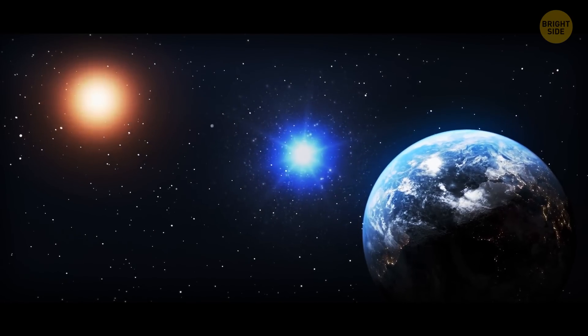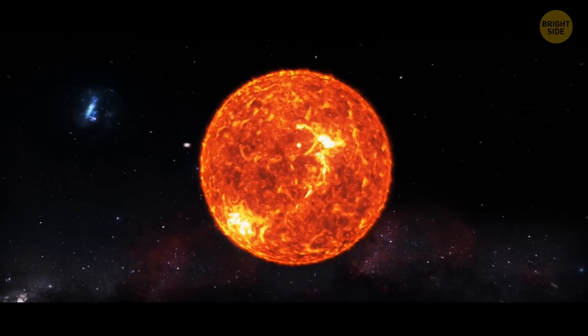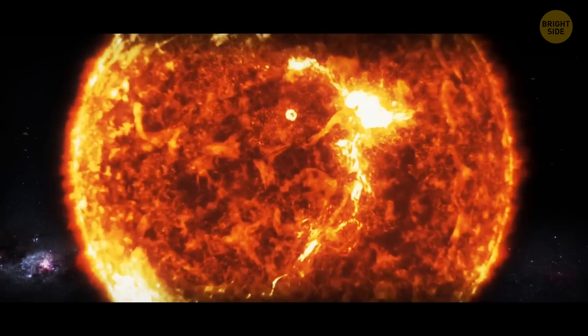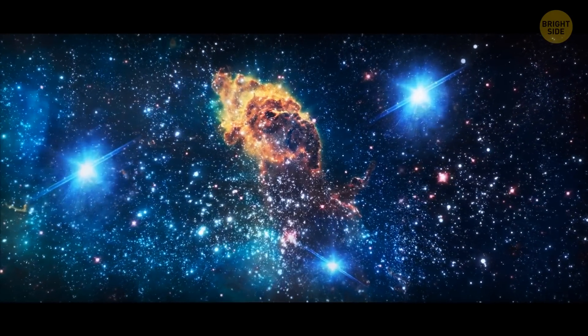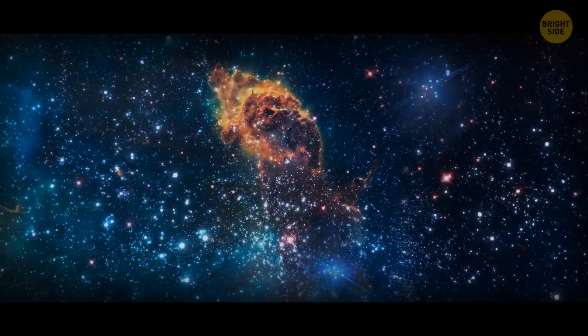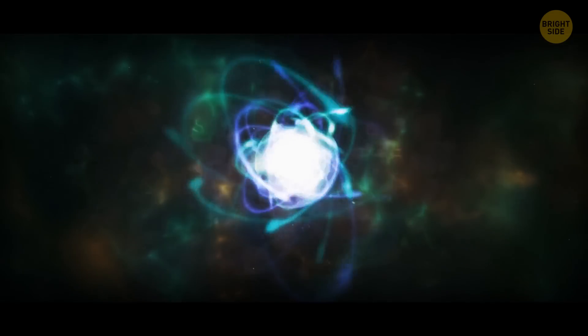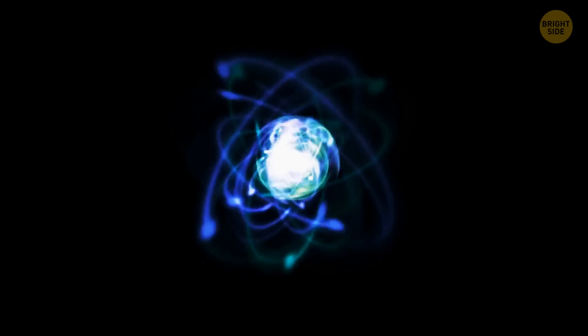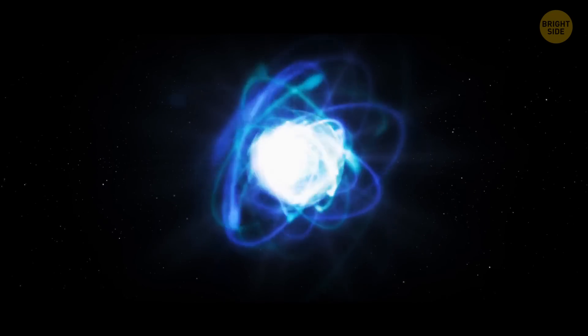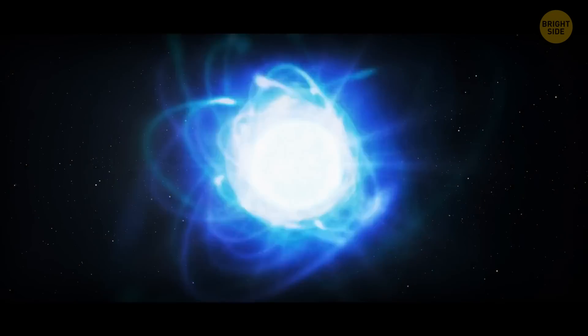Neutron stars are the size of a small city, yet their mass is about 1.4 times that of the sun. They're formed when massive stars die, and their cores collapse in on themselves. The core continues to press in on itself until all the electrons are essentially crushed together, leaving only neutrons. This makes neutron stars one of the densest objects in the universe.